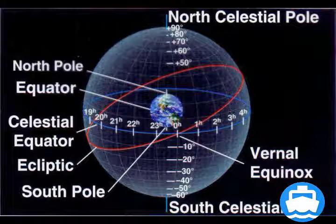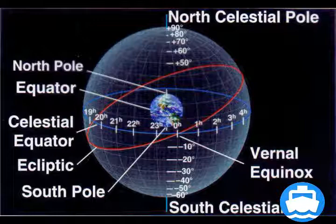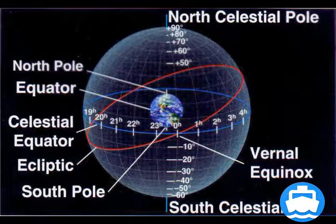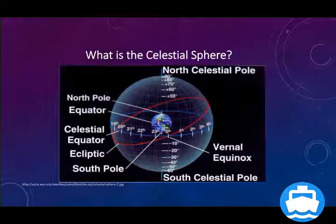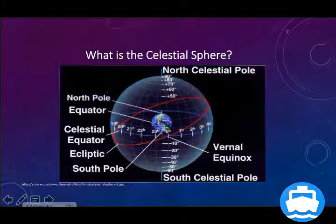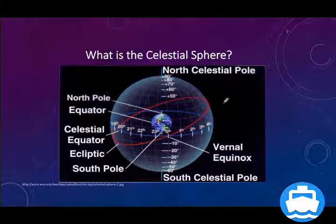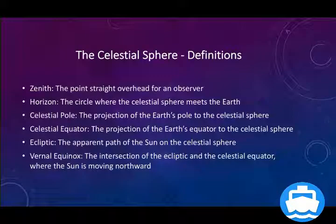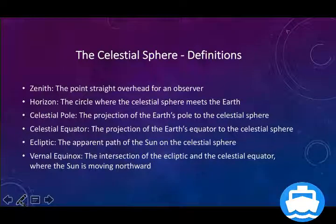Our ancestors thought that Earth is at the center of the universe, because that is what they observed with the naked eye. The sun, stars, and moon rise in the east and set in the west. By this principle, Earth does not move but everything else moves around Earth. The celestial sphere is an imaginary sphere with Earth at its center, and all celestial bodies move within it in different tracks.